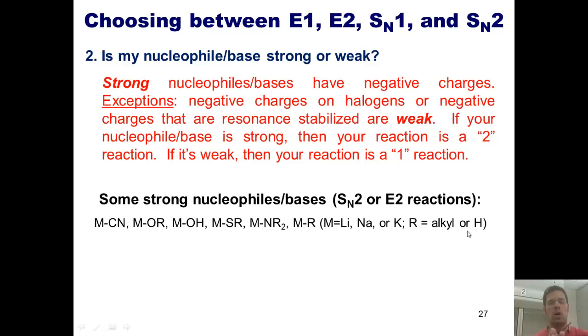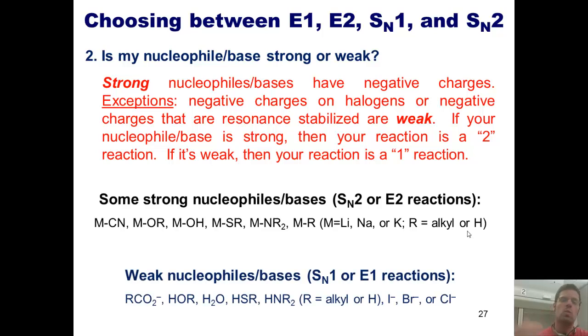These are all strong, reactive, and powerful nucleophiles or bases. Here are some examples of some weak nucleophiles slash bases. I've got a resonance delocalized negative charge, such as a carbonate, or I've got an alcohol, or water, or a thiol, or an amine. Examples where all I've got are lone pair electrons to act as bases. I don't have a localized negative charge at all. I only have a partial negative charge due to polarity.